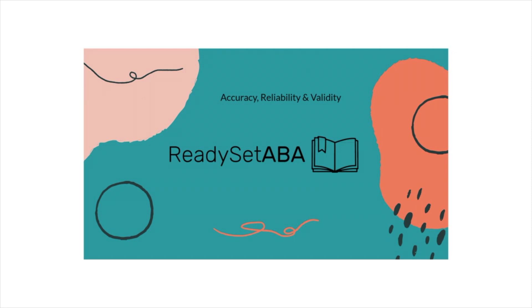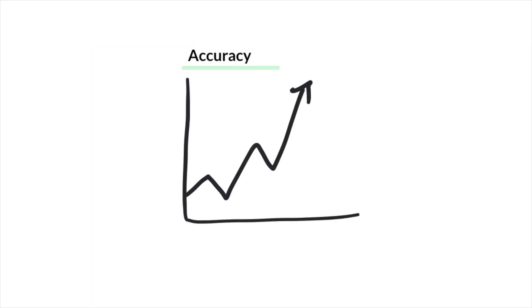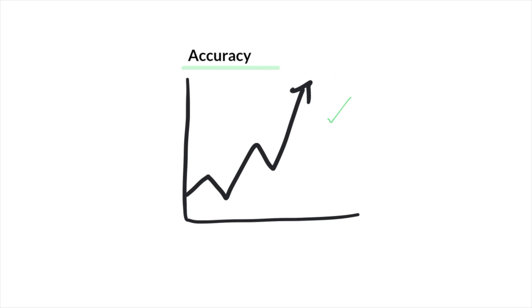So first, when we think about accuracy, we think about data. We have our data procedures that are written in a clear and concise way. We want to make sure our operational definitions are clear and have a discrete beginning and end.